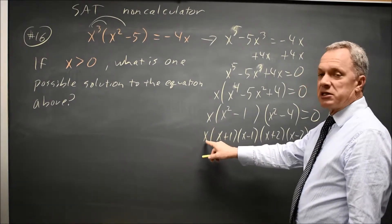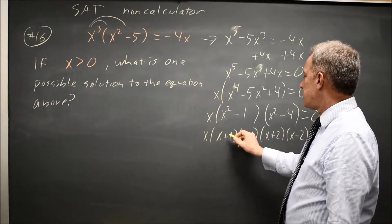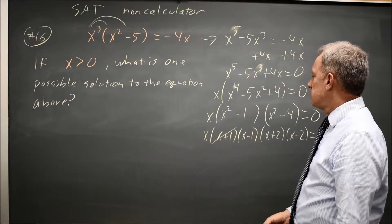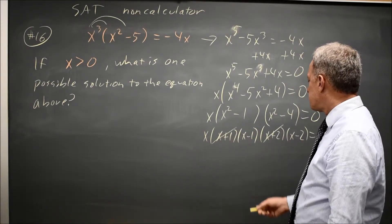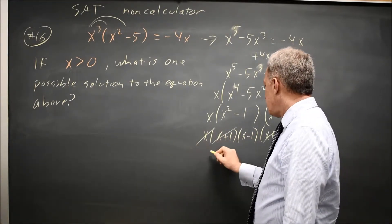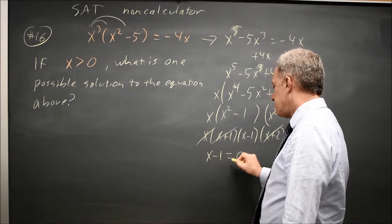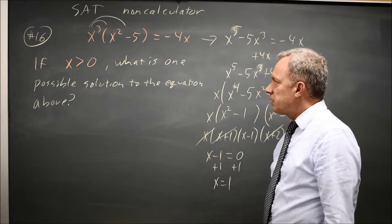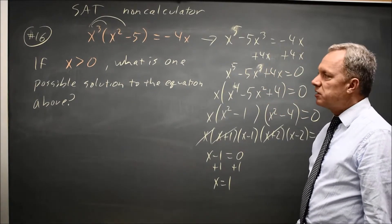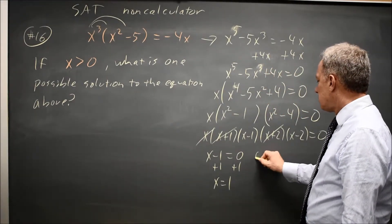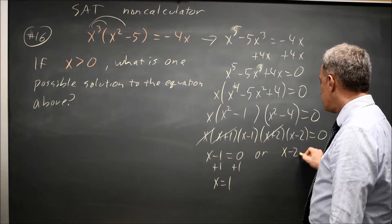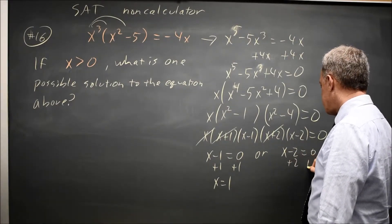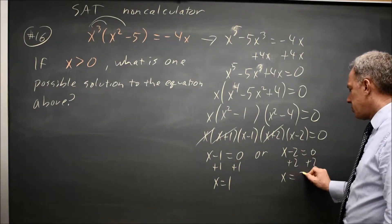x by itself is going to give me zero, which doesn't work because I'm told x is positive. x plus 1 gives me negative 1, x plus 2 gives me negative 2. So either x minus 1 equals zero, which if I add 1, I get x equals 1. And on the SAT, I would stop there because I only need one possible solution. Or x minus 2 equals zero. Add 2 to both sides, x equals positive 2.